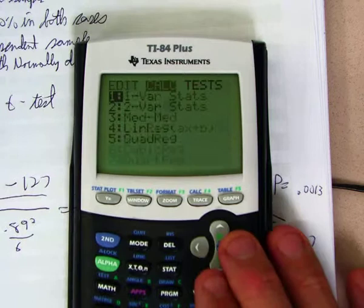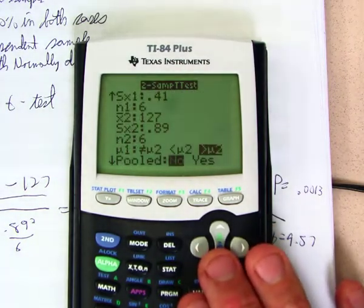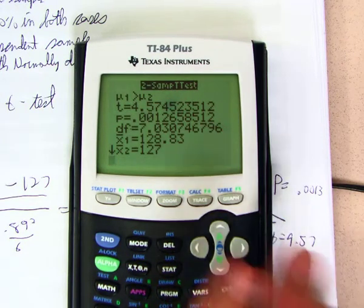So we're just going to go to stat test, two-sample t-test. Got everything in there. This time we'll calculate degrees of freedom, 7.03. Okay? So degrees of freedom equals 7.03.